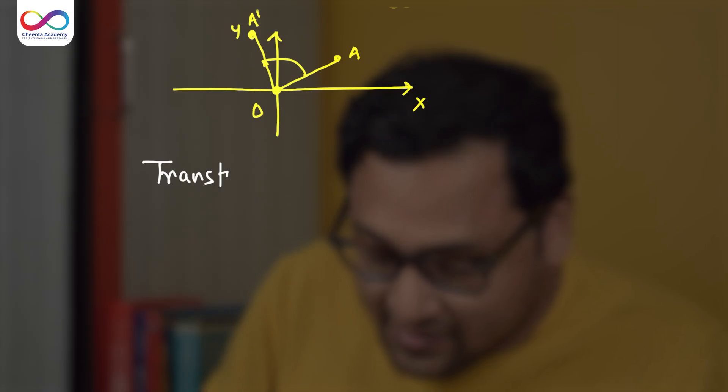There are many beautiful geometric transformations. In fact, the Kleinian way is named after Felix Klein, who is one of the greatest mathematicians of the last two centuries. The Kleinian way of looking at geometry problems is through transformations.